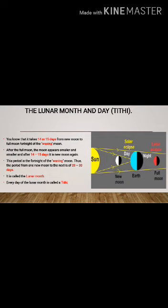Thus, the period from one new moon to the next new moon is of 28 days. It is called as lunar month and every day of the lunar month is called as Titi.